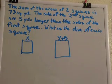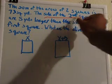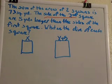Okay, we're getting that because it says right here that the side of the second square is what? It's five yards longer.